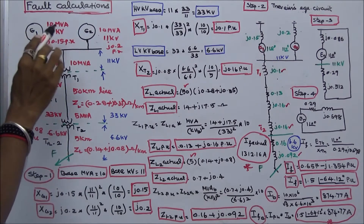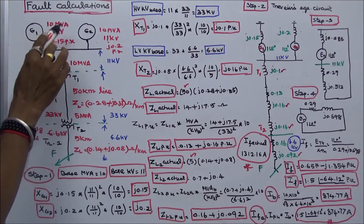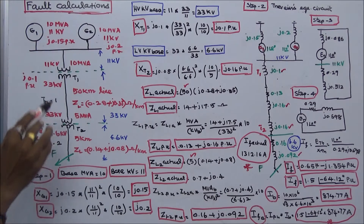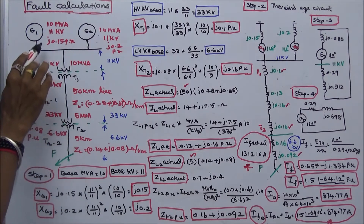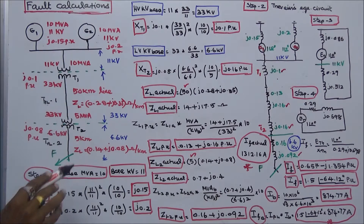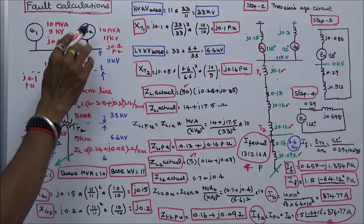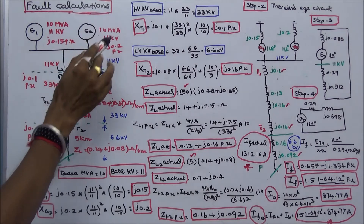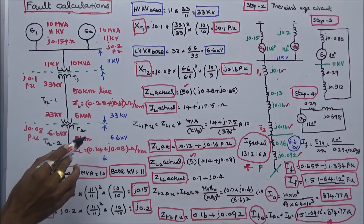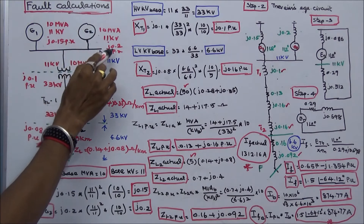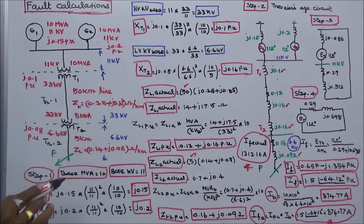Generator 1 rating is 10 MVA, 11 kV, and its subtransient reactance is j0.15 per unit. Generator 2 rating is 10 MVA, 11 kV, and its subtransient reactance is j0.2 per unit.